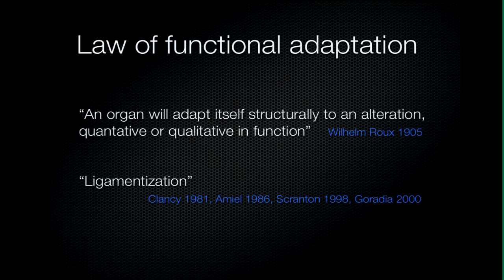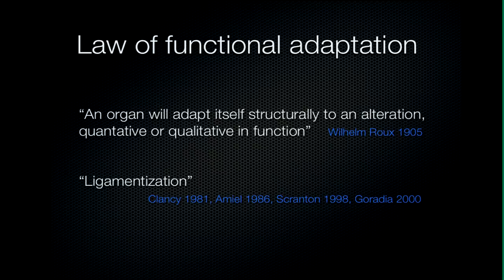In 1905, William Wolff stated the law of functional adaptation, which says that an organ will adapt itself structurally to an alteration quantitative or qualitative in function. This would mean that if we put a graft at the correct position inside the knee as an ACL replacement and make it submit to the correct forces at the various phases of rehabilitation, we expect it to become tissue like an intact ACL. This process of changing tissue has been termed ligamentization by the authors who first started doing research on this.